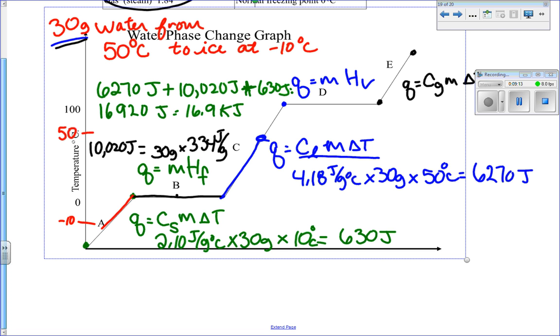Now, sometimes I may just ask you a question where you're just going to have to do one step. So you might just have to convert the liquid and cool it down. So you might have only had to do the 6,270. But if there are multiple phases, multiple changes that are taking place on your graph, you have to add them all up.